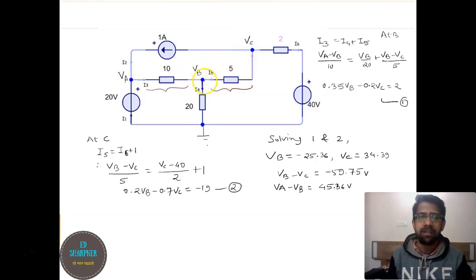If we consider VB or VC, let us first apply the nodal analysis at B. So here I3 equals I4 plus I5, which we have written. If you express them in the voltage and resistance form, you get such an expression, and ultimately if you simplify, you will get this equation in VB and VC.